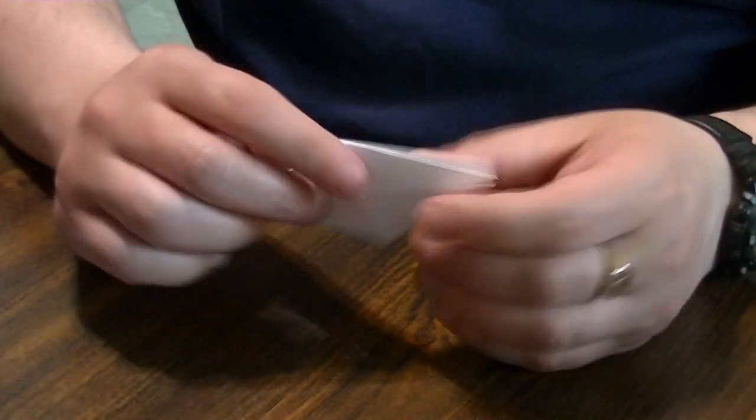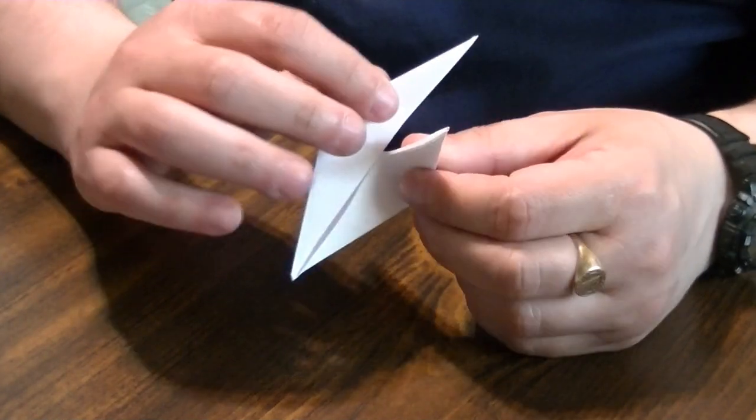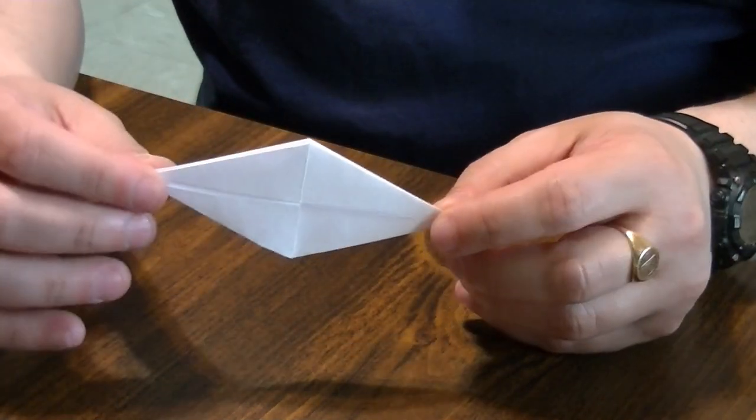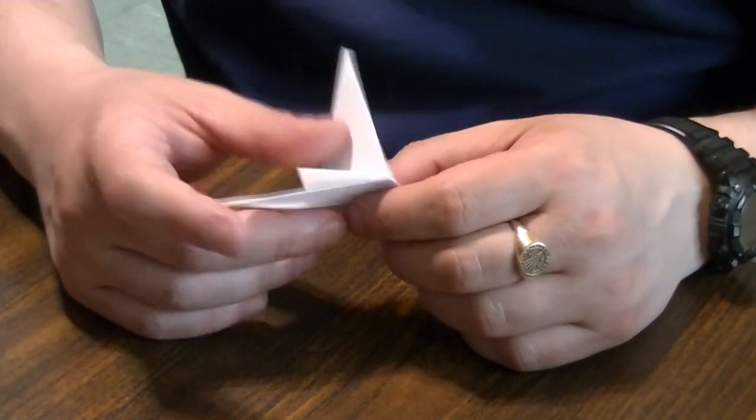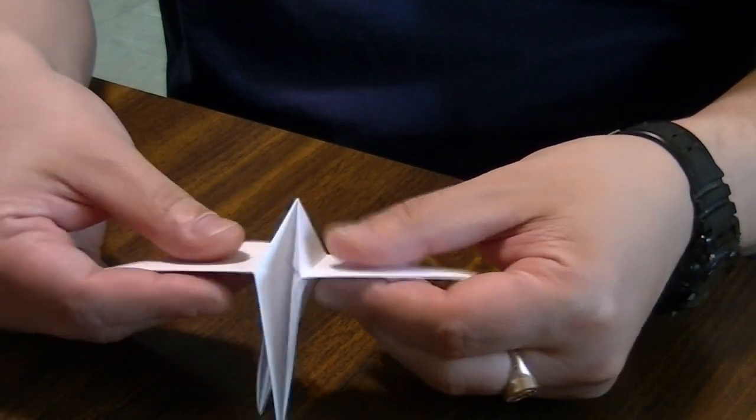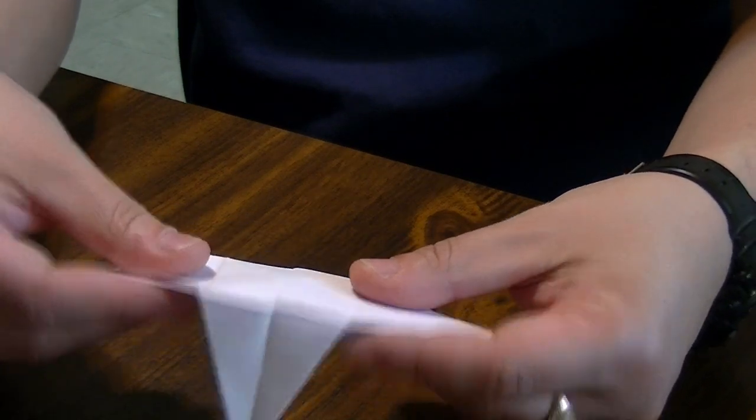And this is your famous bird base, so-called, because it has wings, and it has a head, a neck and tail. If I was going to make a paper crane out of this, we would start to fold things into the neck and tail. But for now, we're just going to open the wings up, and we're going to pull on the wings until the diamond in the center flattens out, like this.